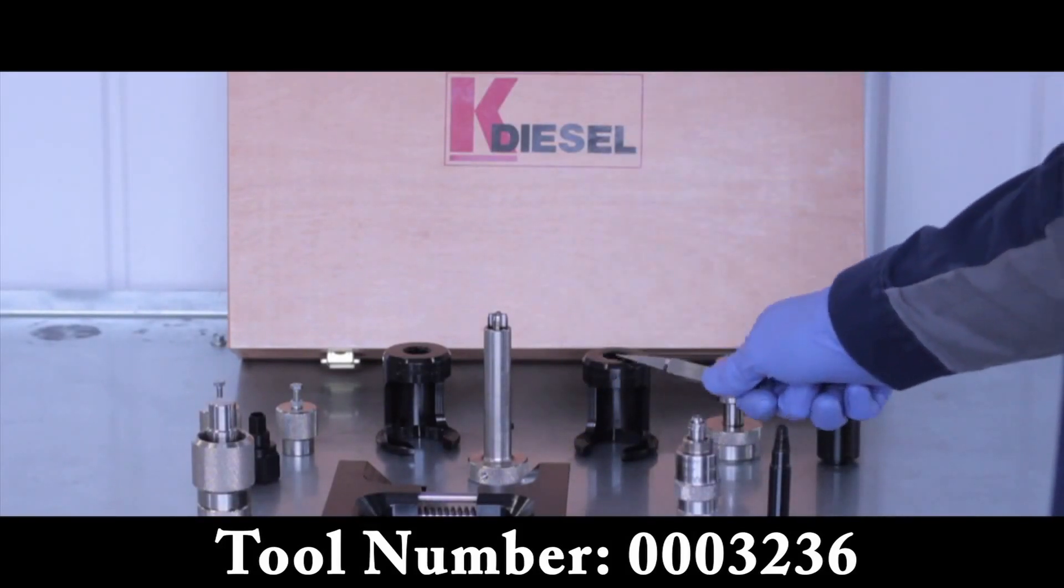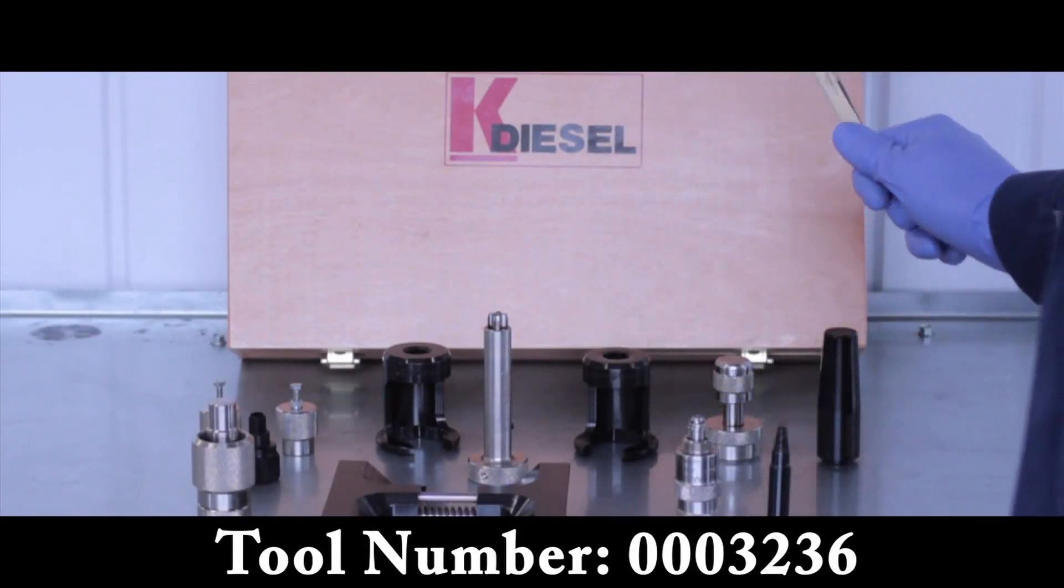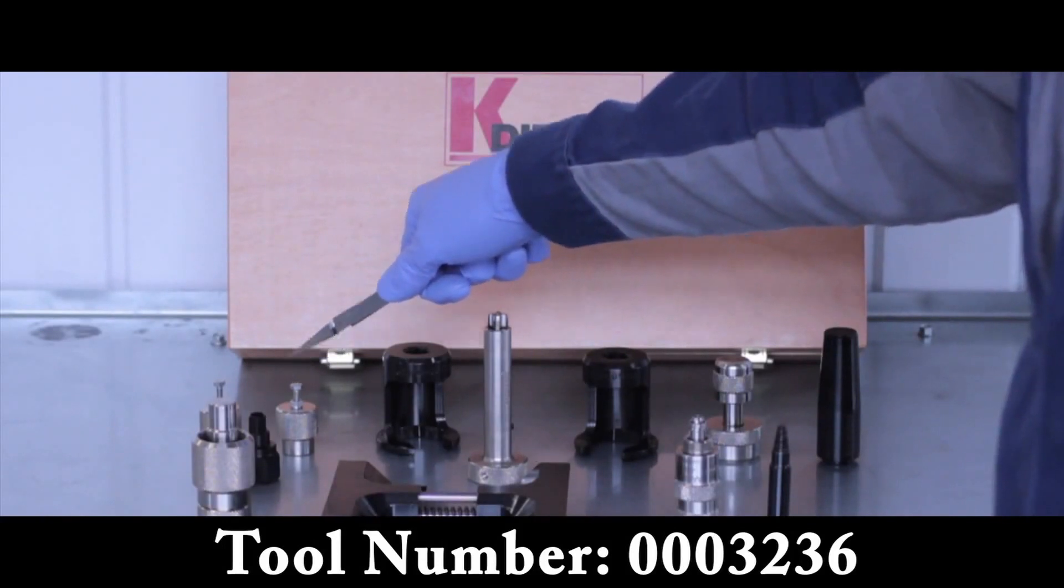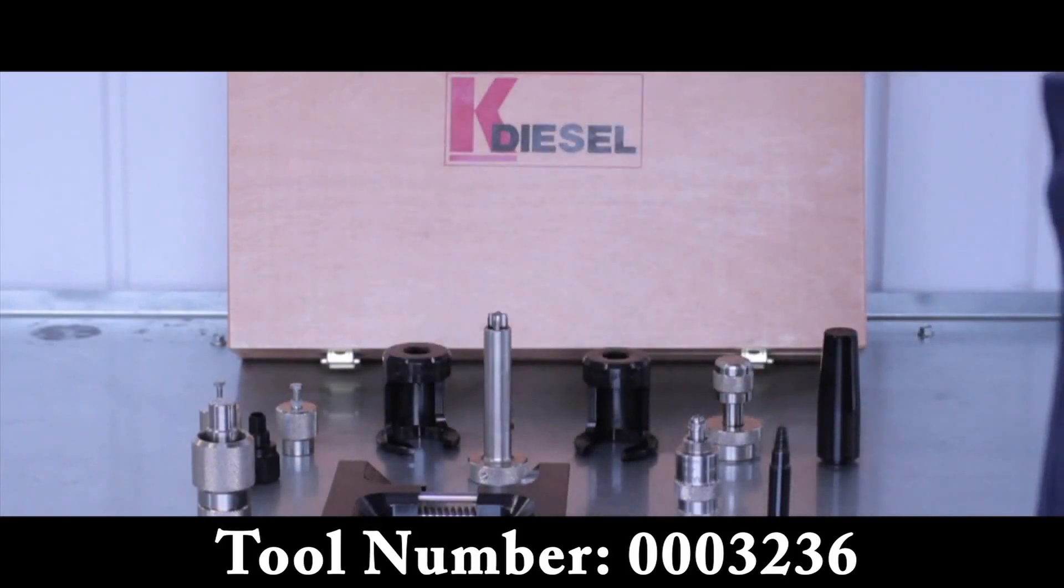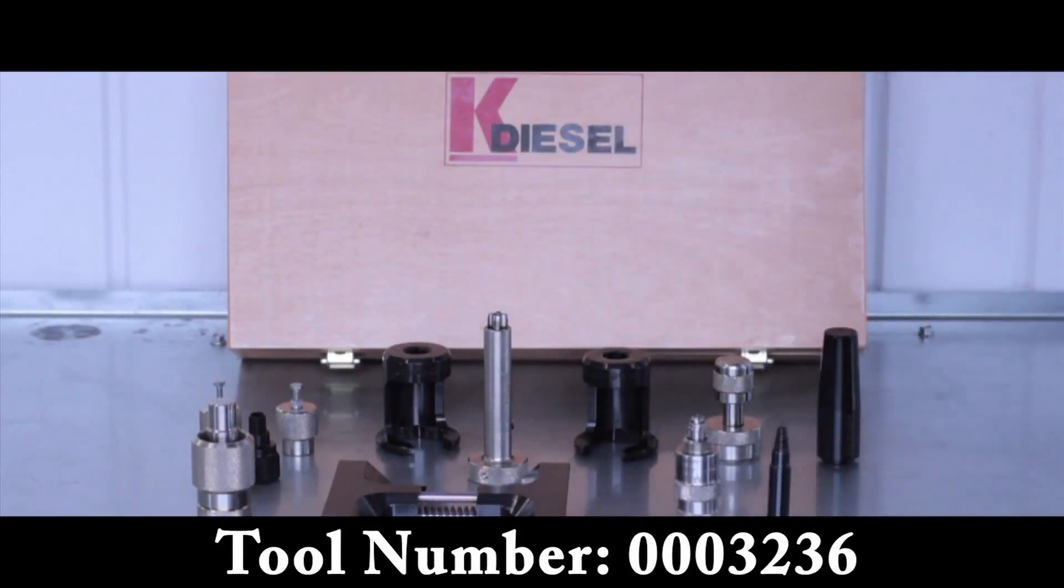Secondly, we have the actuator sockets for locking and removing the actuators, and we have tools here for removing the pilot valves in a safe way rather than tapping them out. We also have the tool for inserting them again later. We have the thread cleaner here, and we also have the high-pressure seal remover and the tool for setting the height of the high-pressure seal once it's ready to be pre-fitted.